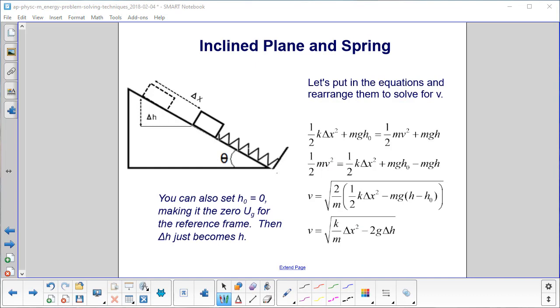Let's put in the equations and rearrange them to solve for velocity. So here is our initial condition right here, here's our final, and then we just do some algebra on this step, this step, and we come up with the velocity at this point here, after it's been pushed down and then shot up by the spring, is the square root of k over m times delta x squared minus 2g delta h.